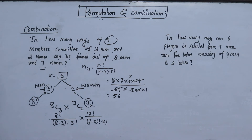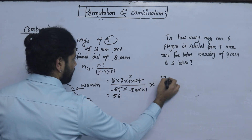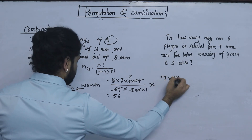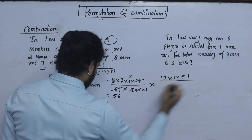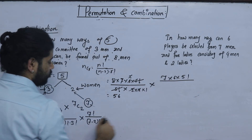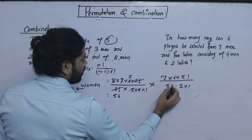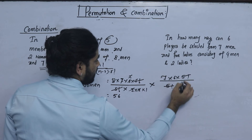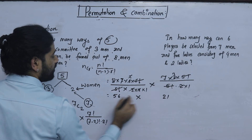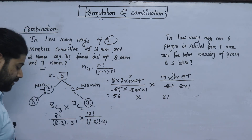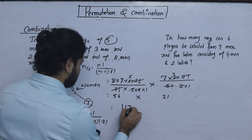For two women from seven women: C(7,2) equals 7 factorial divided by 5 factorial into 2 factorial, which is 7 into 6 divided by 2 into 1, giving 21 ways. So the total number of ways is 56 into 21 — that gives us the answer.